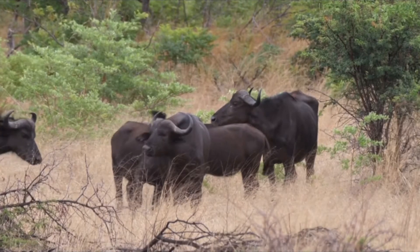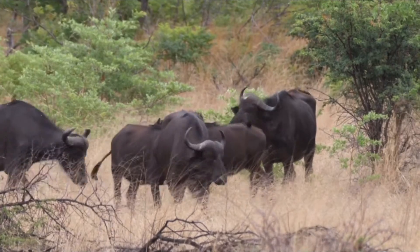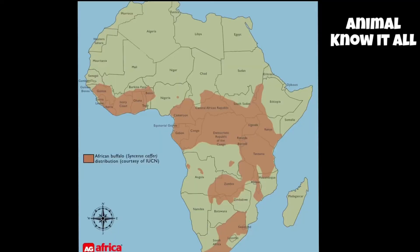The African buffalo is native to East and South Africa, in countries like Ethiopia, all the way through Kenya, Uganda, Rwanda, Tanzania, Zambia, and Malawi. They are also found to a lesser extent throughout Angola, Mozambique, and Swaziland.